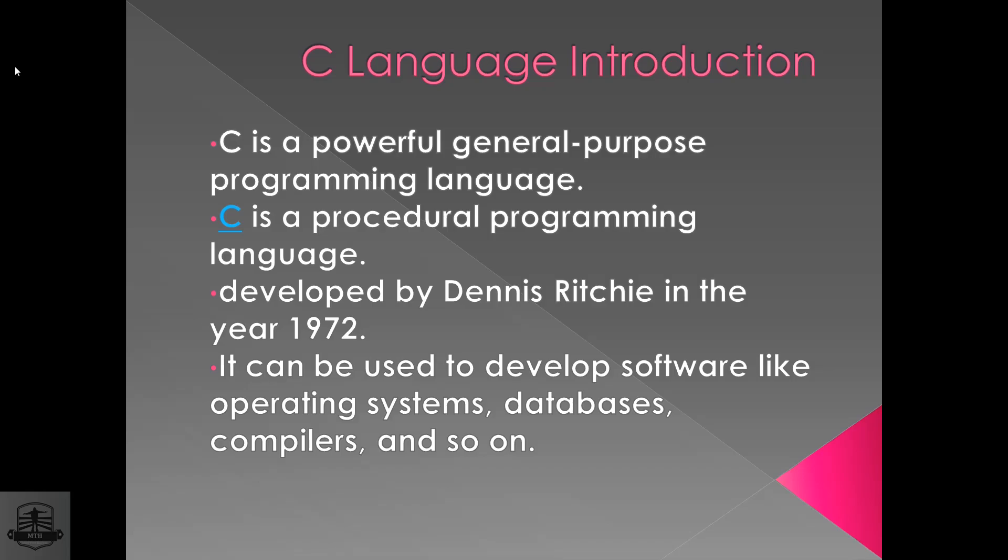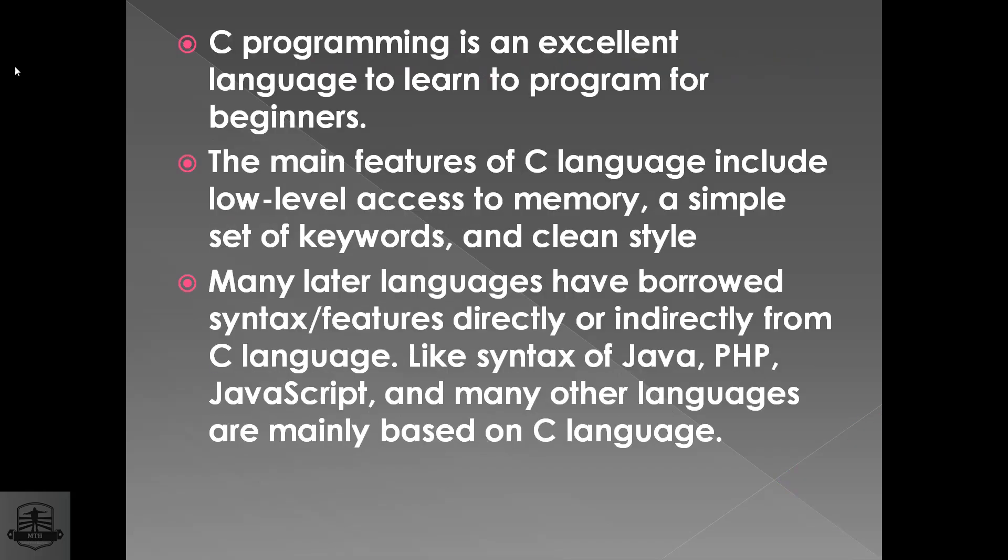C can be used to develop software like Operating Systems, Compilers, and Databases. If you want to develop this software — Operating System, Database, Compiler — they can be developed in C. Operating System means you can see the kernel, Linux. Linux and the Operating System are developed in C.